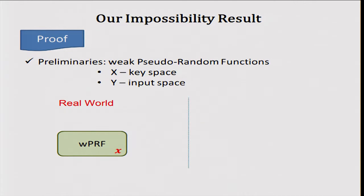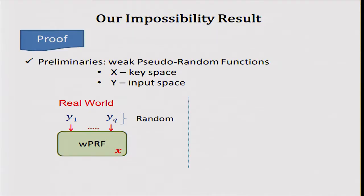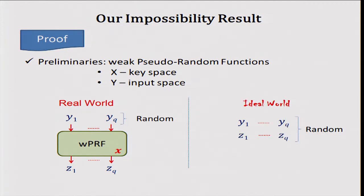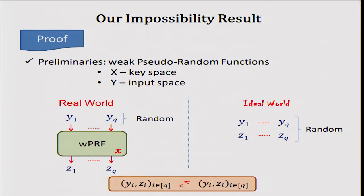For the proof, I require this family of weak pseudorandom functions. A weak PRF is parameterized by a key and an input. In the real world, you select inputs at random — this is what distinguishes a weak PRF from a regular PRF — apply the weak PRF with a particular key, and get outputs Z_1 up to Z_Q. In the ideal world, both the inputs and the outputs are completely chosen at random. You require that the two distributions are computationally indistinguishable.